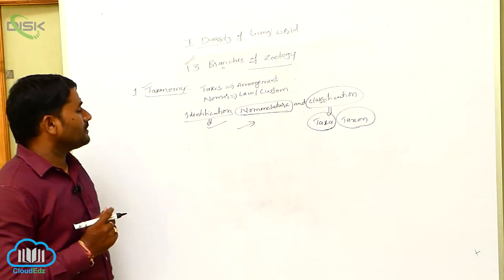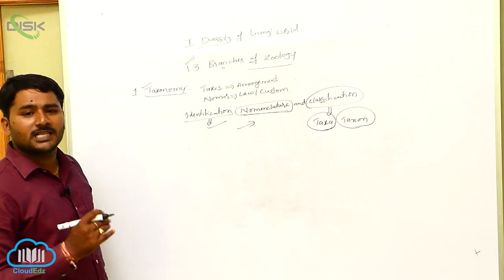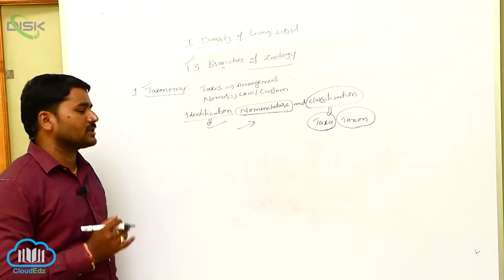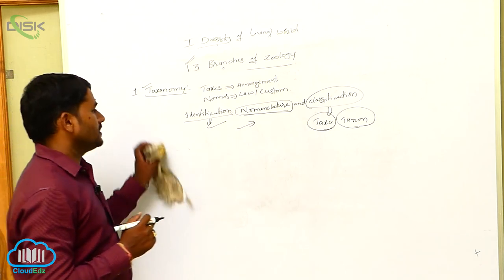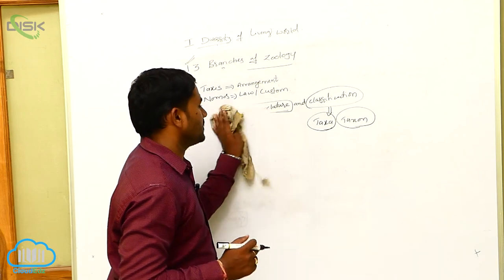The taxonomy is a branch of zoology that deals with some scientific processes like identification, nomenclature, and classification. So this is the first branch of zoology.